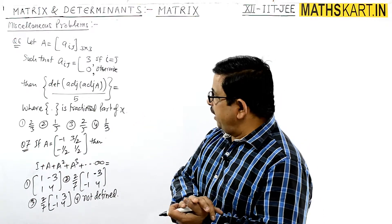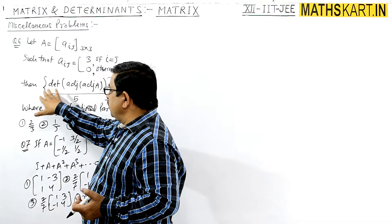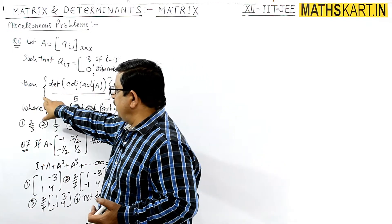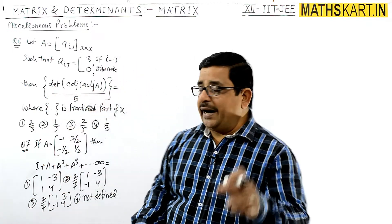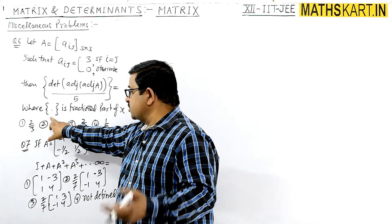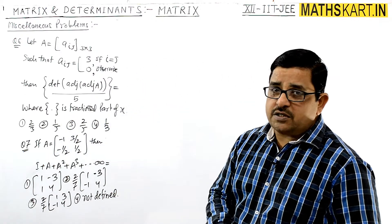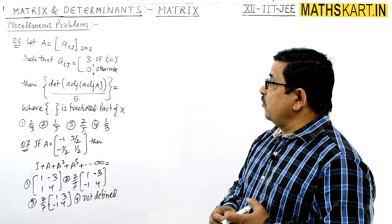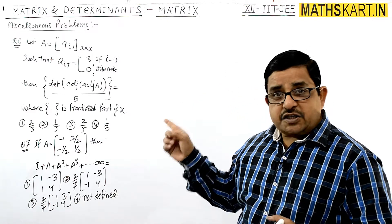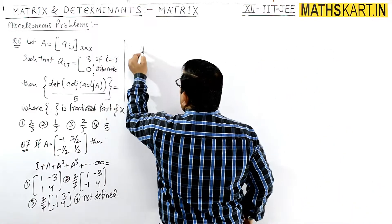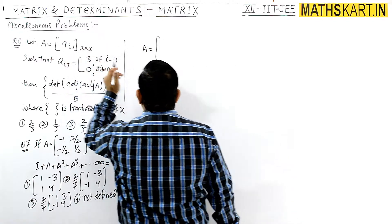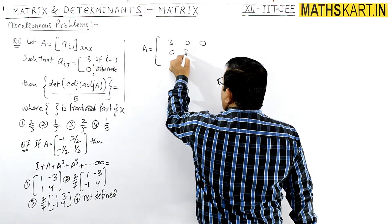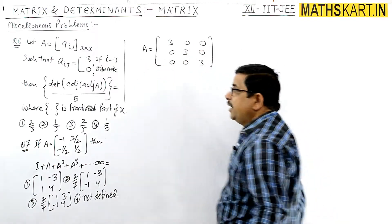So matrix A will be constructed accordingly. We have to find out the determinant of adjoint of adjoint of A. The matrix A has value 3 on the diagonal and zero elsewhere, so it becomes: 3, 0, 0 / 0, 3, 0 / 0, 0, 3.